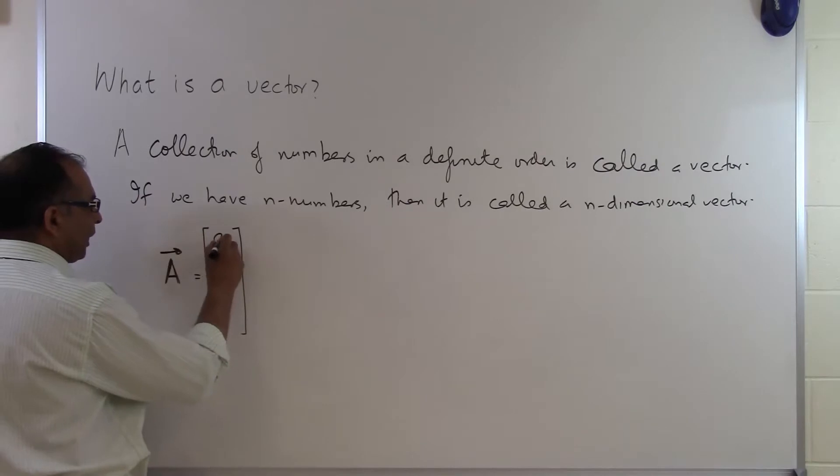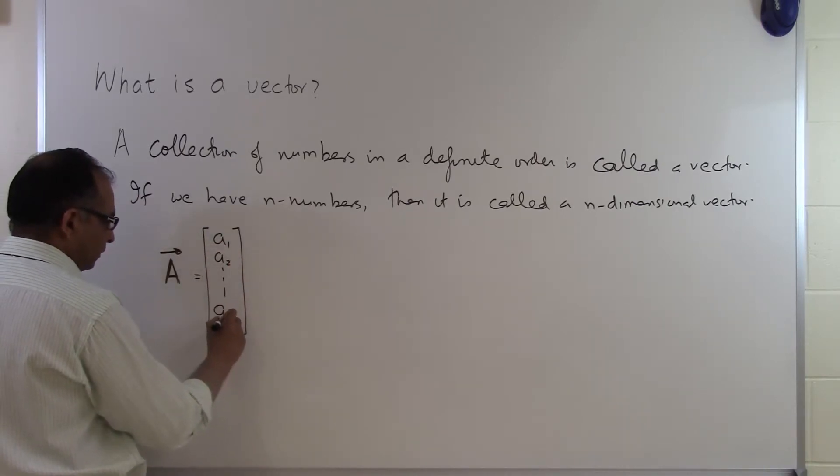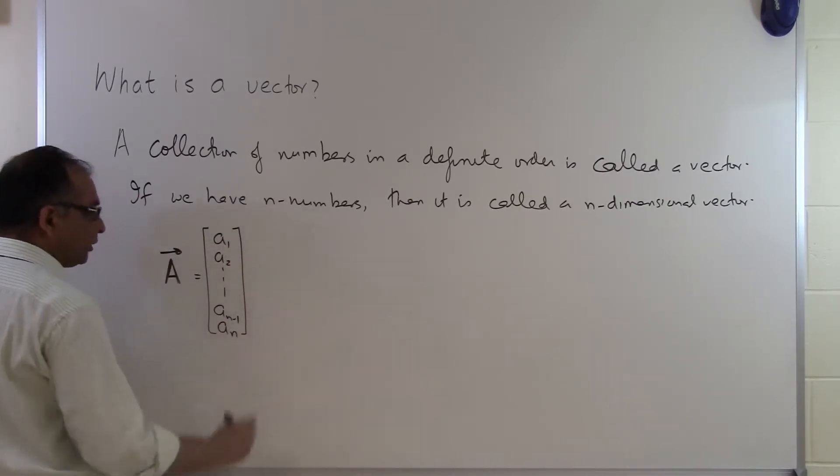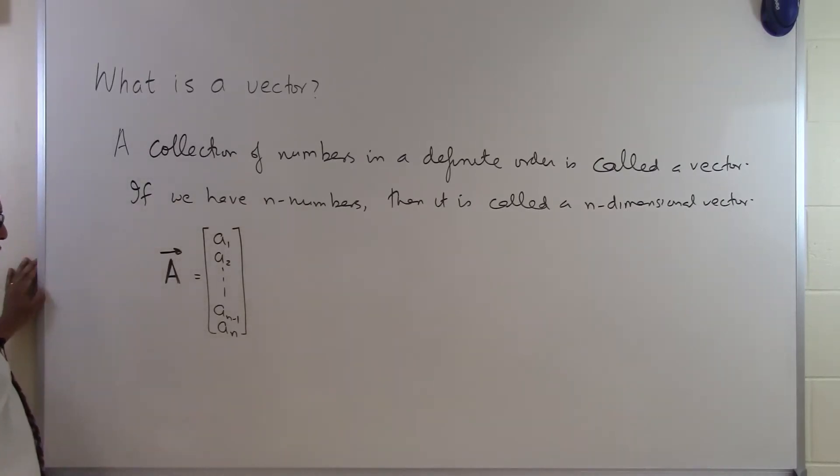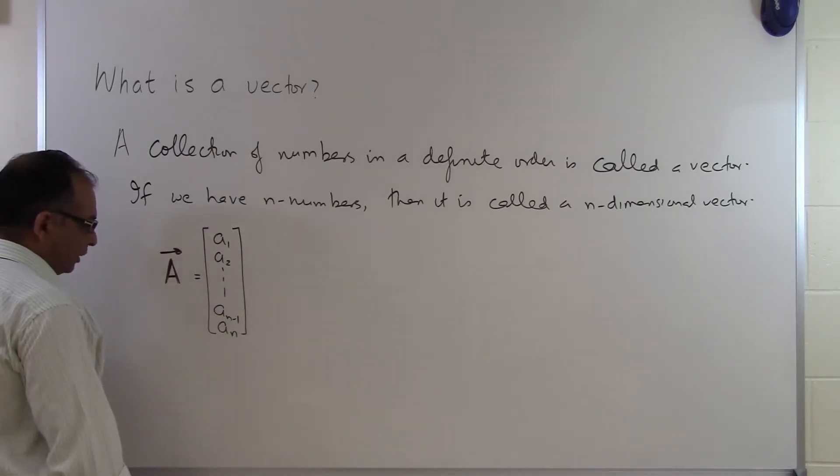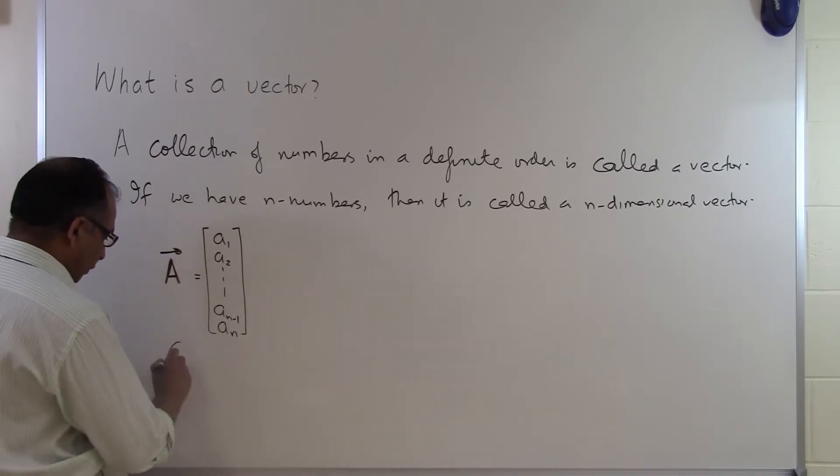Let's suppose we have n entries here. Since we have n numbers, we call it an n-dimensional vector. And we have all these elements or entries in a column, so we call this a column vector.